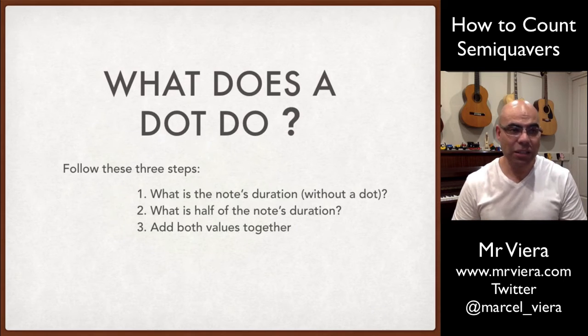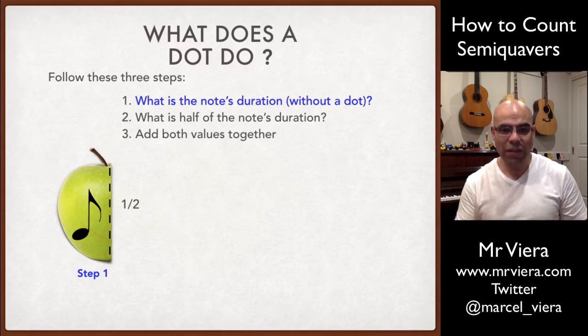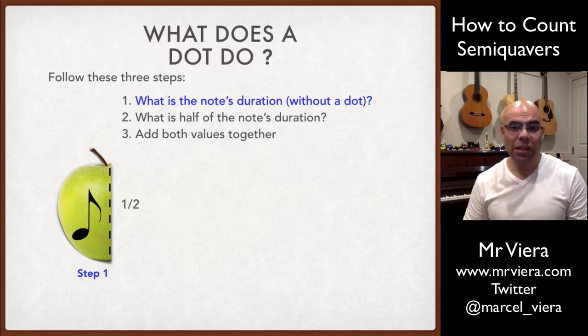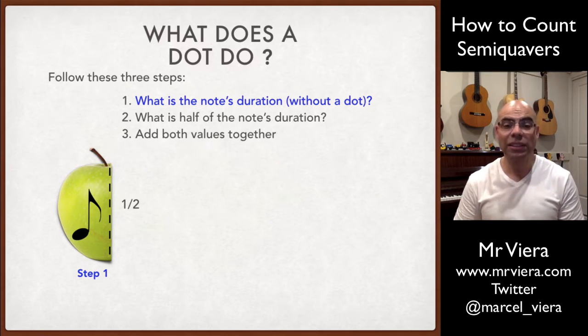Let's apply this to the dotted quaver. So the first thing we're going to do is what is the note's duration without a dot? In this case it's a quaver, so it's half.